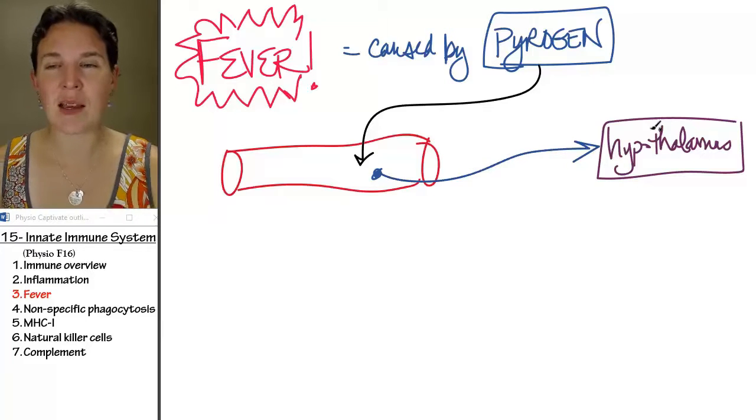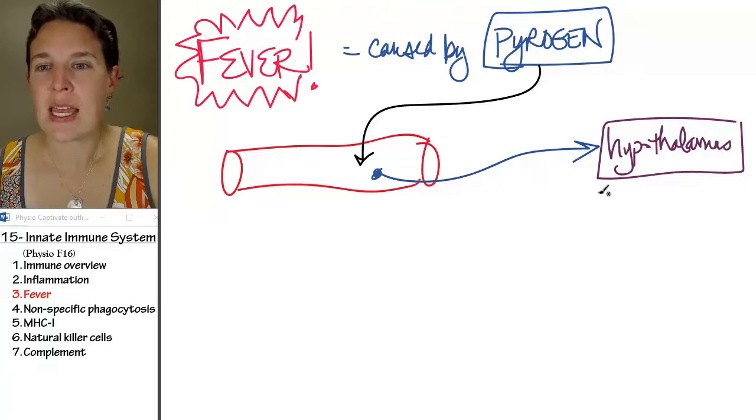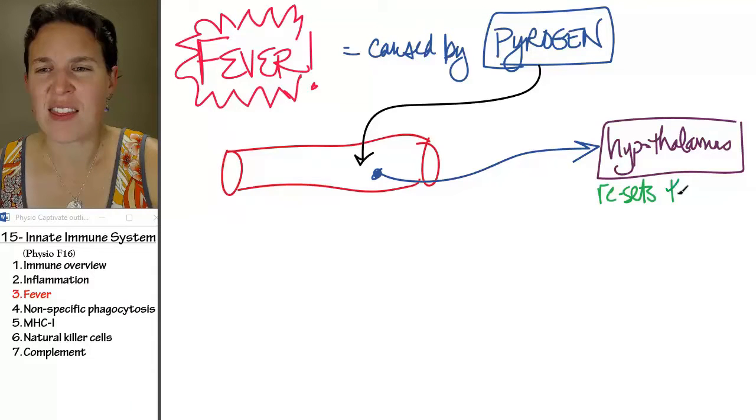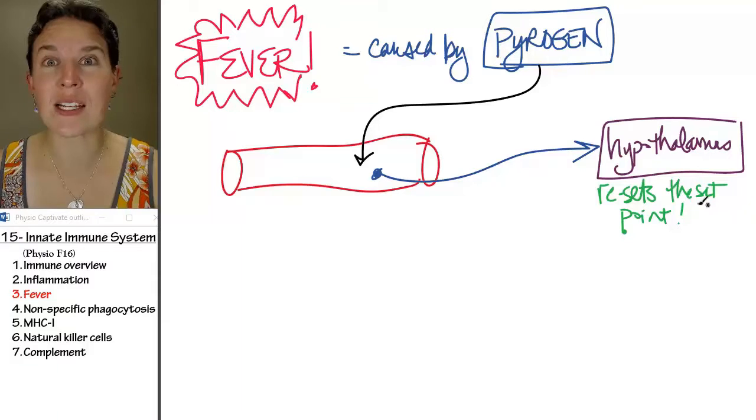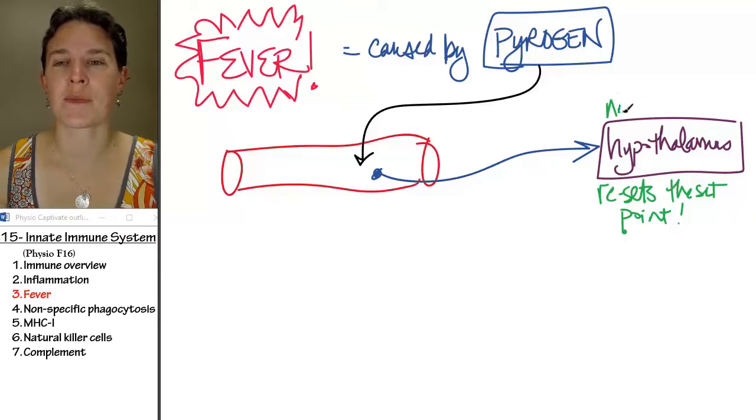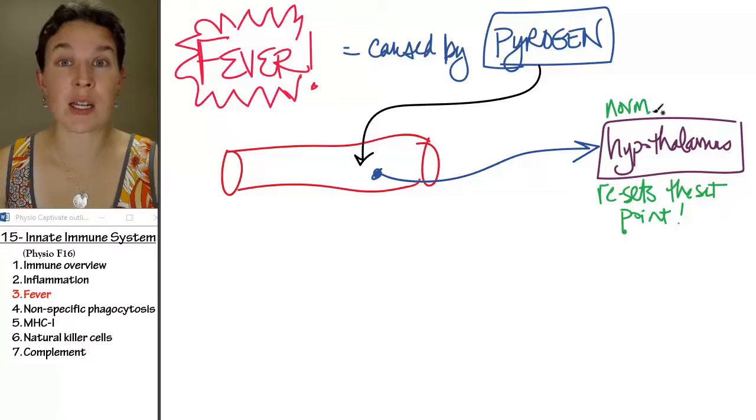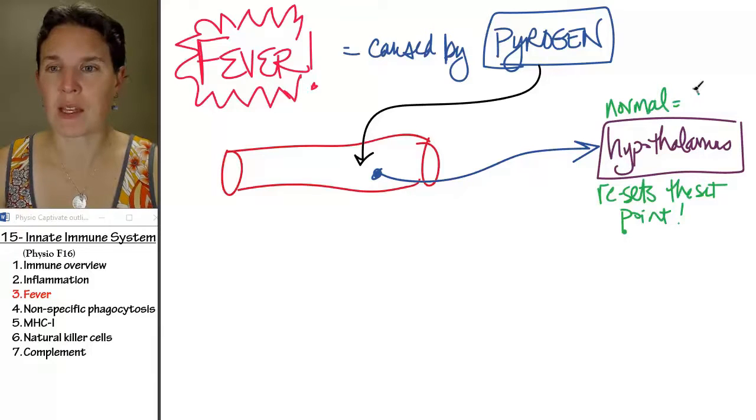So here comes my friend the pyrogen. It comes into the hypothalamus, and are you ready for this? It resets the set point. What is the normal set point for temperature, body temperature? Yeah, it's 98.6 degrees Fahrenheit.